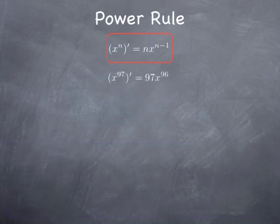For instance, if we want to obtain the derivative of x to the 97, we no longer need to go back to the definition and expand a power of 97. We simply use the power rule: the derivative is 97·x^(97−1) = 97x^96.